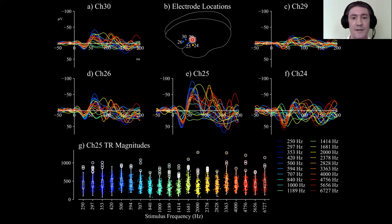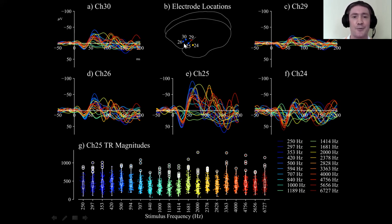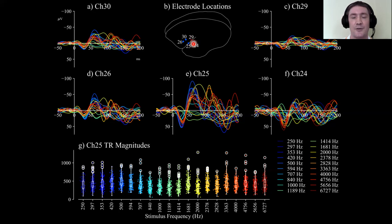Channels 29 and 24 produced smaller amplitude responses and were more sensitive to higher frequency tones. We cannot do a proper tonotopic mapping here because we don't have the spatial resolution required, but we can attribute this to those regions of auditory cortex being more sensitive to higher frequencies.